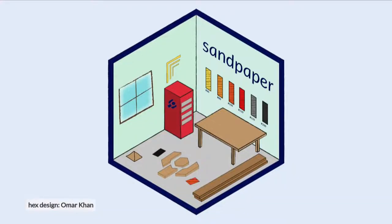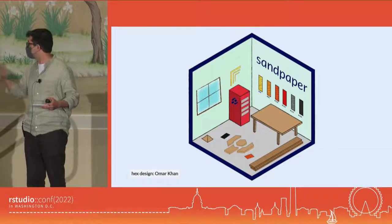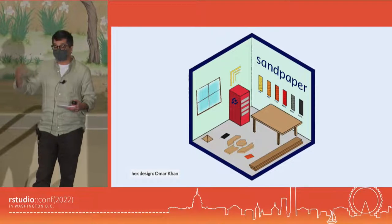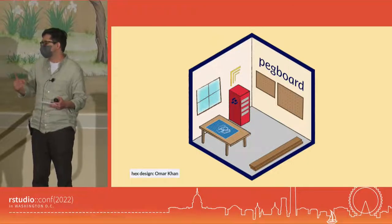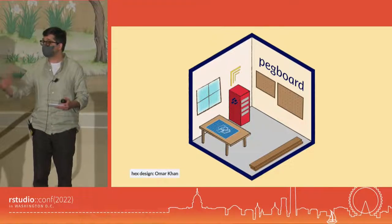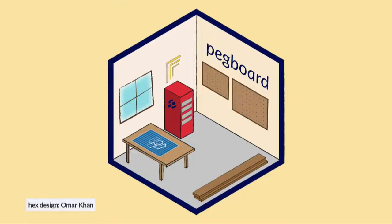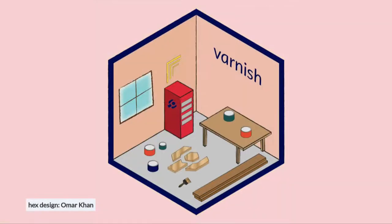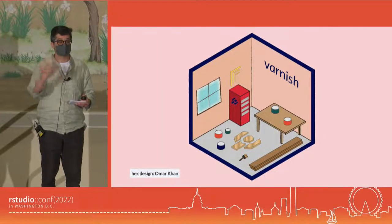The Workbench consists of three packages. The first package you'll interact with is sandpaper — this is what orchestrates everything, and the only command you really need to know is sandpaper serve. The next package, pegboard, works on the inside; sandpaper uses it in the backend to validate your Markdown and make sure it actually does what you want it to do. And then varnish comes in at the end — it gives you the styling of your lessons to make sure they are accessible and beautiful.